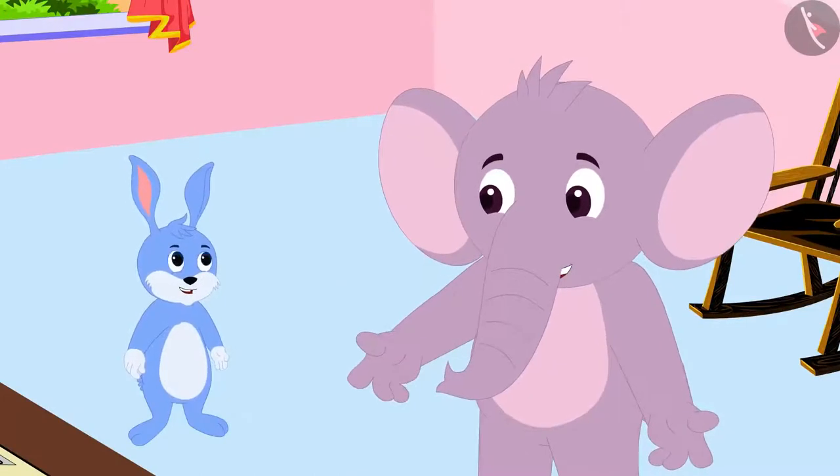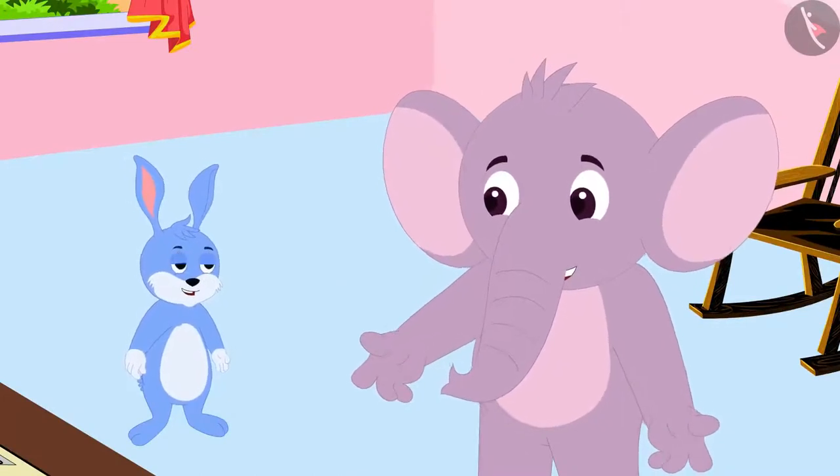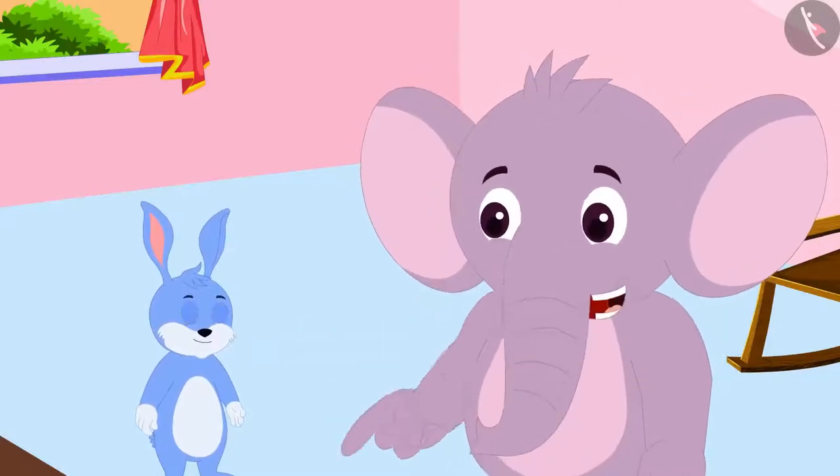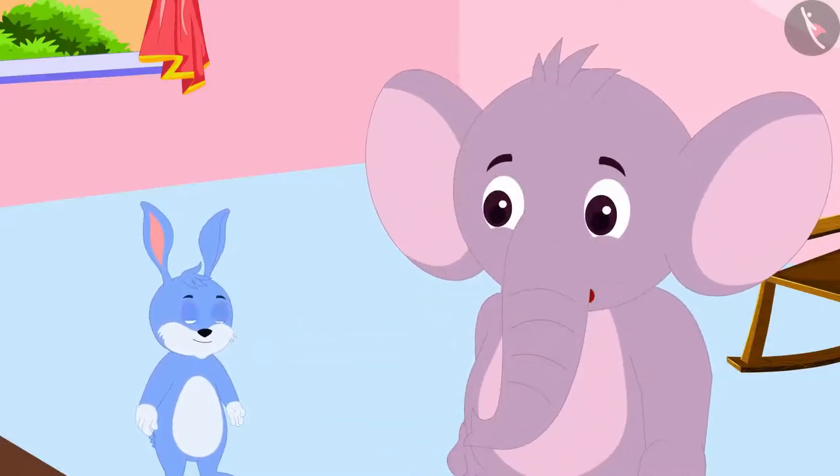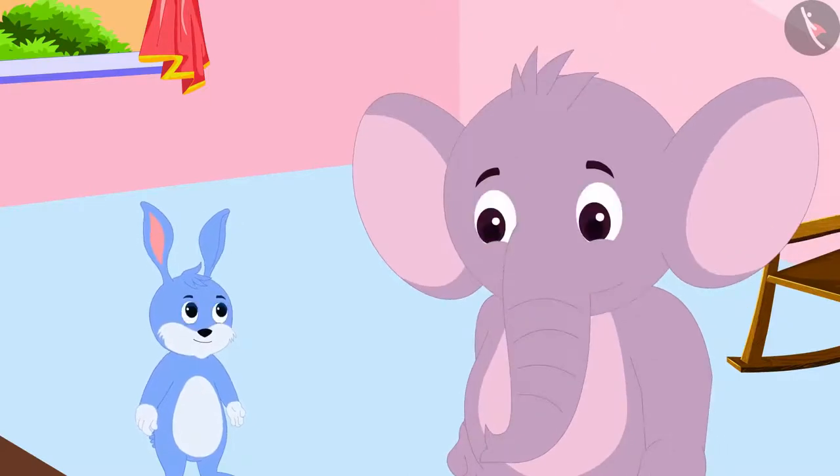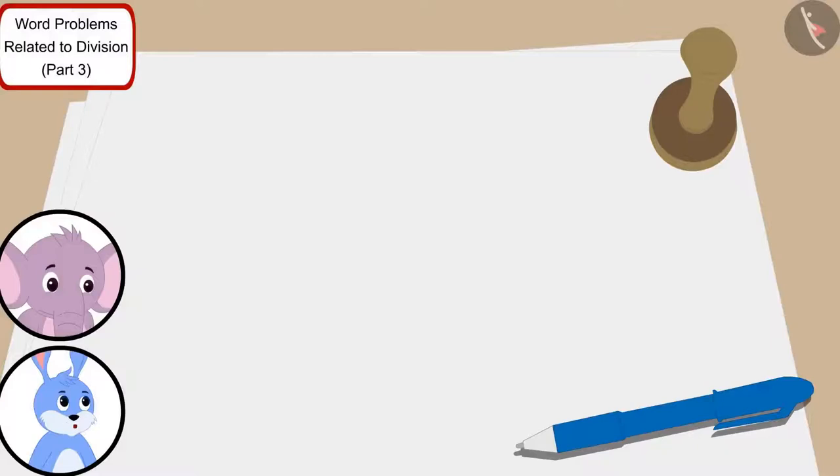Both friends decided that they would distribute the amount by giving Rs. 50 to each of the poor villagers. Bunni, can you tell how many villagers will we be able to distribute this reward to? Appu asked Bunni. This is very easy. We just have to divide 7555 by 50, Bunni told Appu.